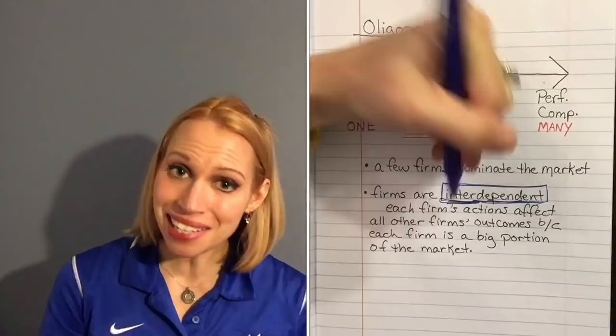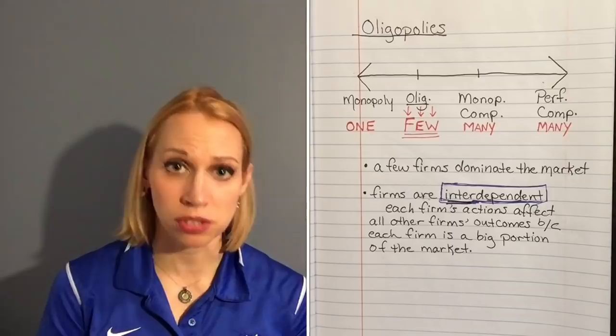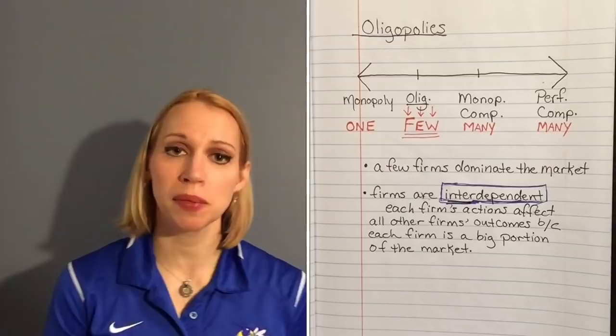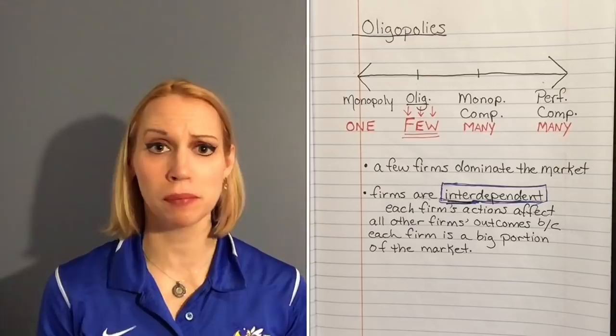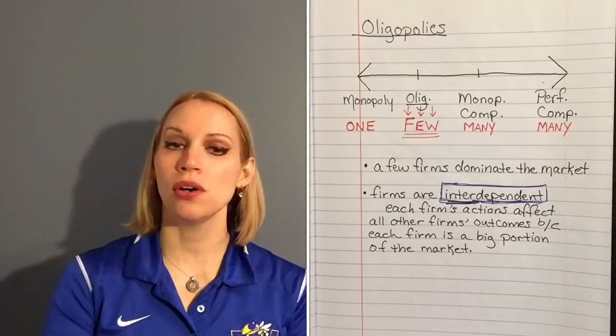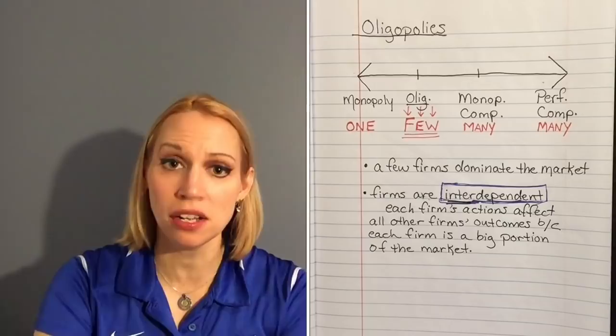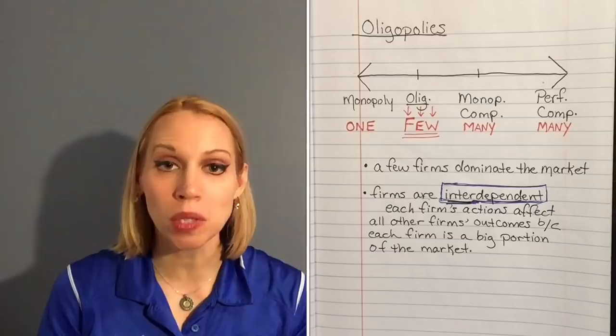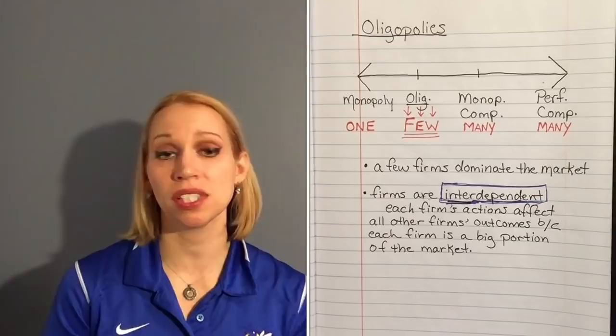Independent means that you're handling your own business and the only person you're going to affect is yourself. That's true for monopolies because there's only one person in the market, and it's pretty much true for competition because if you're one out of thousands, you really can't have much of an impact. But in oligopolies, you're a big chunk of the market, so your actions affect others and their actions affect your outcomes and profits. Oligopolistic firms are interdependent.